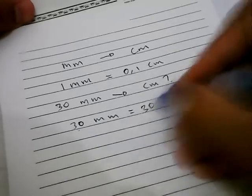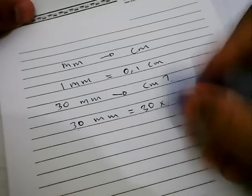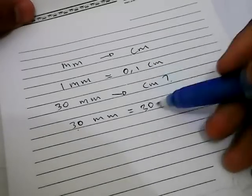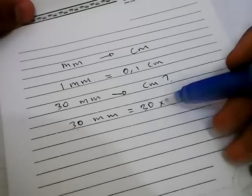Why do we need to multiply this 30 by 0.1? Because we want to convert millimeters into centimeters in this case.